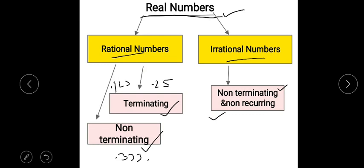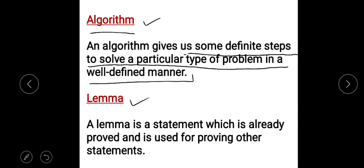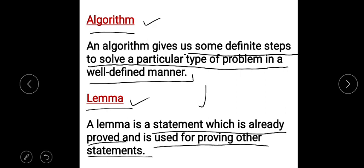An algorithm gives us definite steps to solve a particular type of problem in a well-defined manner. In maths, we approach a question in a definite manner with certain fixed steps. A lemma is a statement which is already proved and is used in proving other statements. A lemma helps us to form any algorithm.